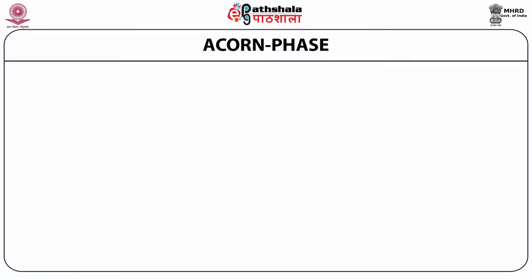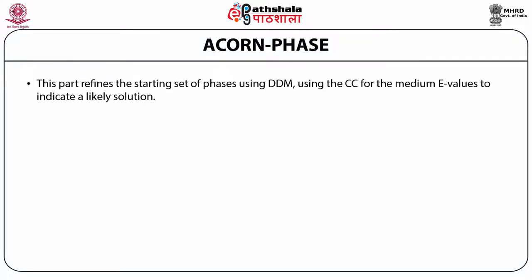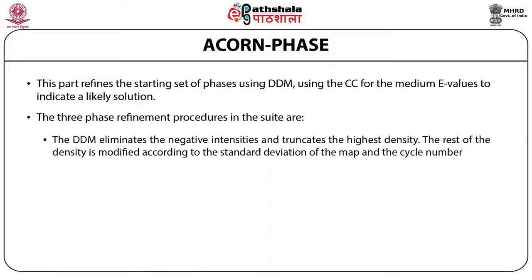ACON phase refines the starting set of phases using dynamic density modification, using the CC for the medium E values to indicate unlikely solutions. The three phase refinement procedures in the suite are: DDM (dynamic density modification), which eliminates the negative intensities and truncates the highest density. The rest of the density is modified according to the standard deviation of the map and the cycle number.